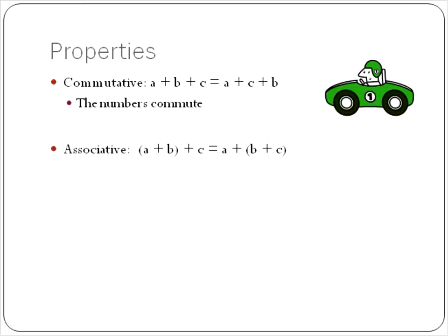Another addition property is the associative property. And that means that it's usually shown with parentheses. The numbers will stay in the same order like this A, B, C, A, B, C. But we're choosing, in this one, we're adding A and B first.